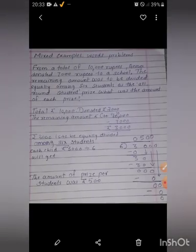What is the number? 40. 40 books are packed in each carton. Now come to next question: mixed examples word problem. From a total of 10,000 rupees, Anna donated 7,000 rupees to a school. The remaining amount was to be divided equally among 6 students as the all-round student prize. What was the amount of each prize?